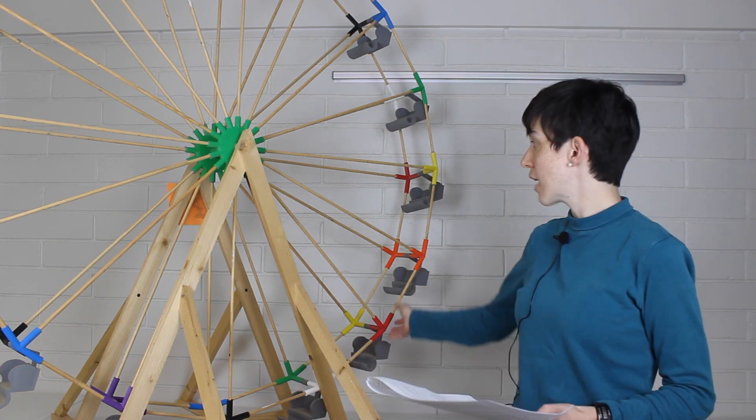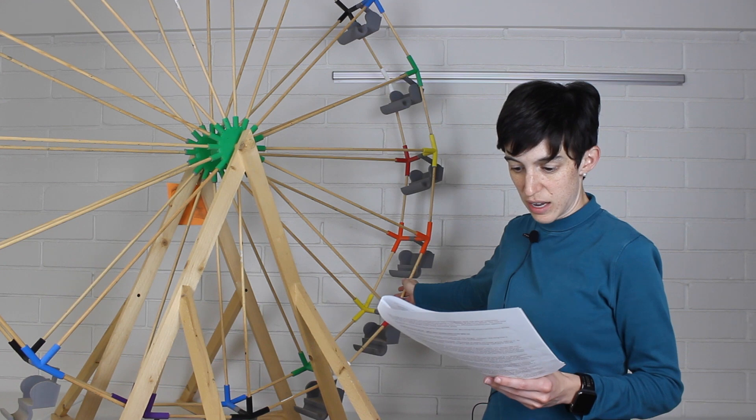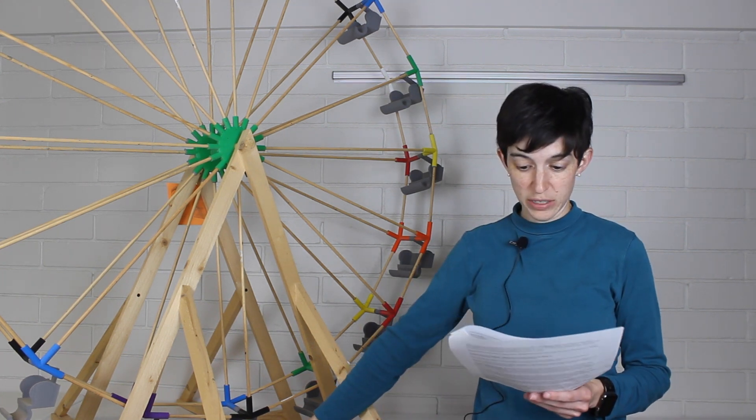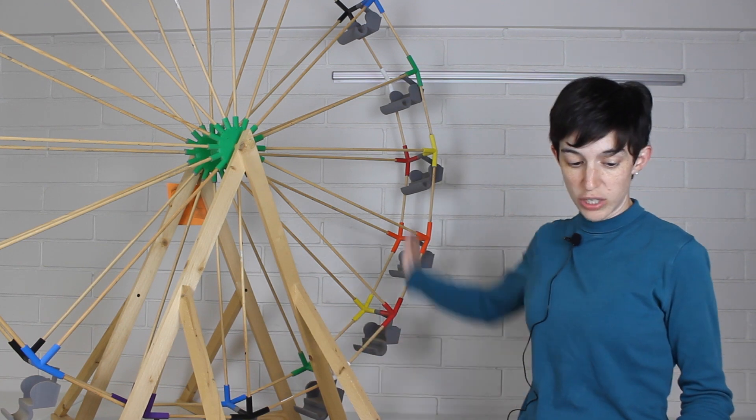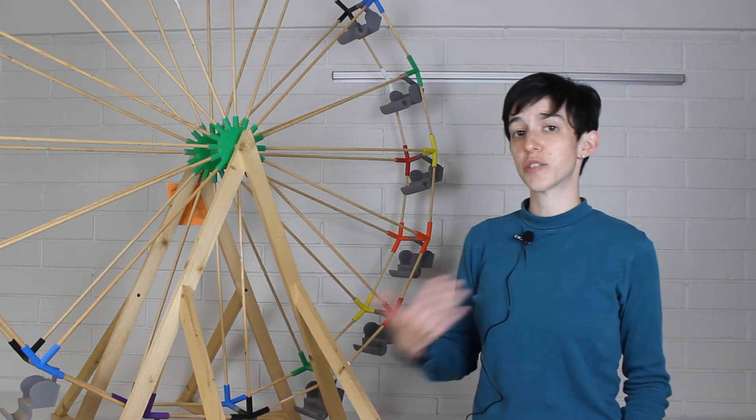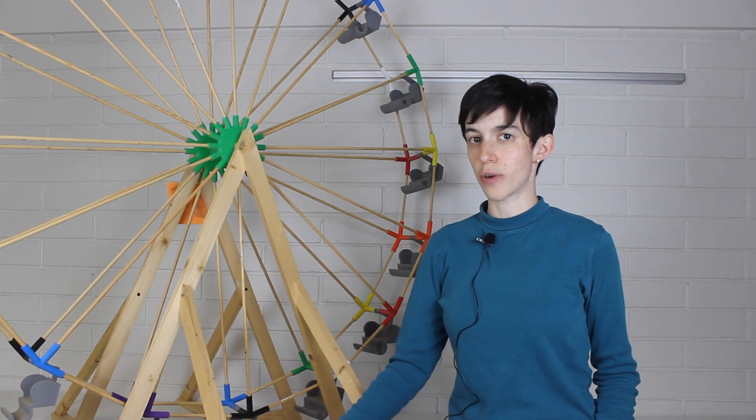If you think about a Ferris wheel, it actually rotates at a really consistent speed, unless it's stopped at the bottom to let passengers on and off. When you are in motion on a Ferris wheel, what you are experiencing is velocity. Velocity is essentially just speed with a direction.